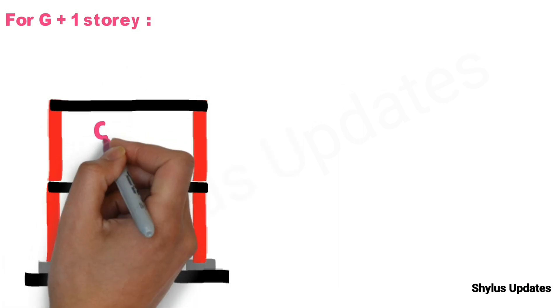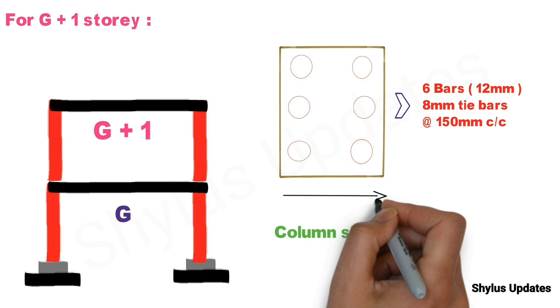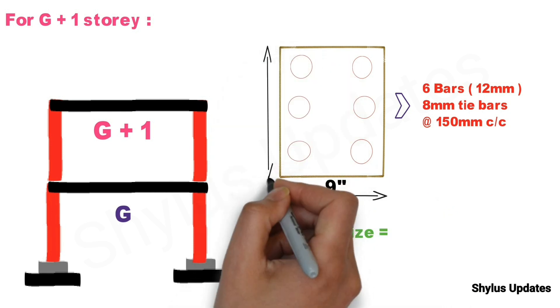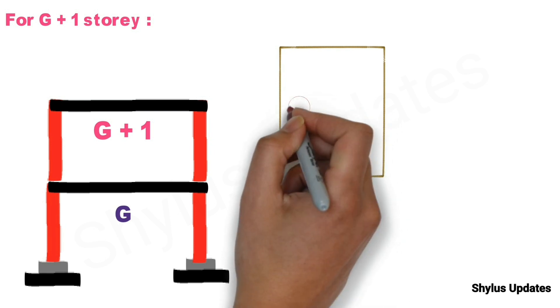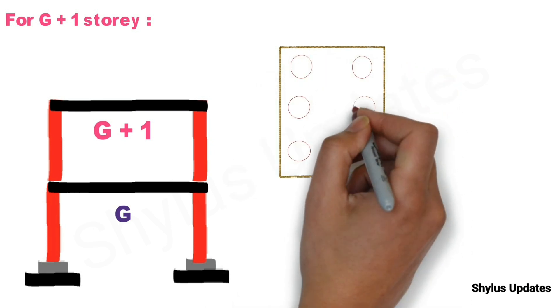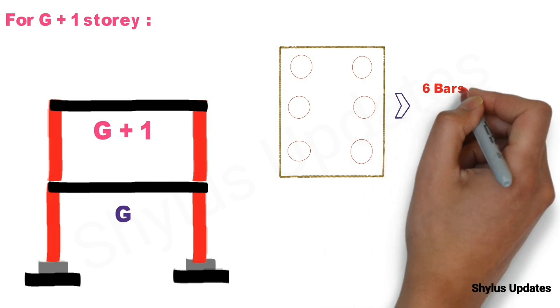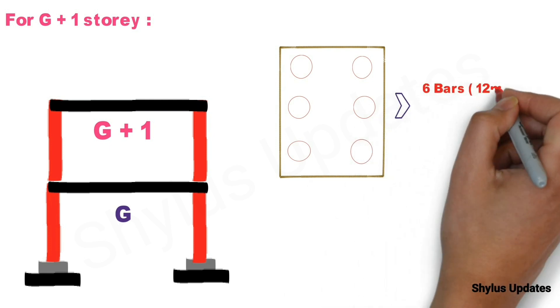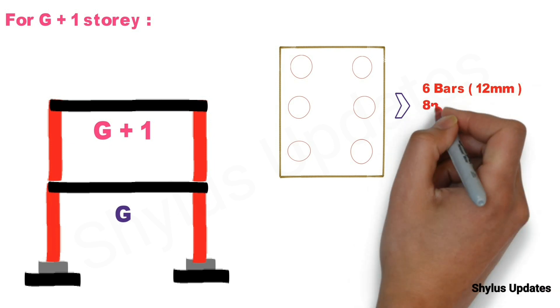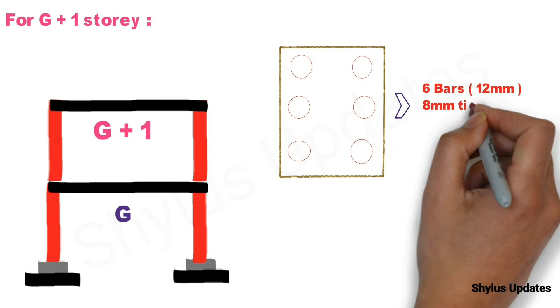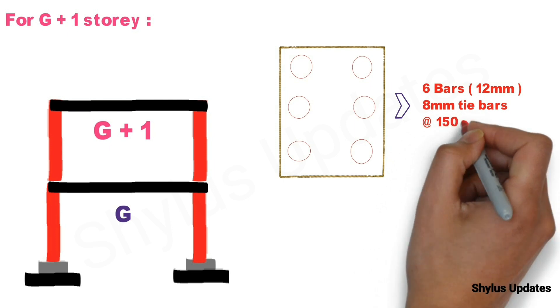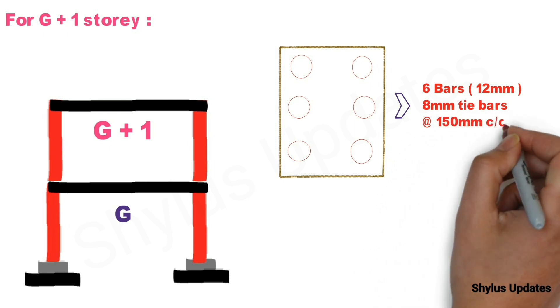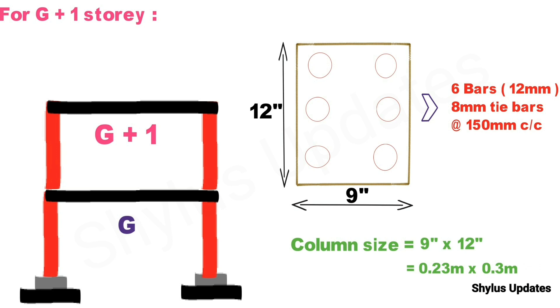For G plus 1 storey, the column size should be 9 inch into 12 inch or 0.23 meter into 0.3 meter. For this size of column we should provide minimum of 6 numbers of steel bars each 12 mm dia. This is minimum dia bar. And tie bars of size 8 mm spaced at 150 mm center to center distance spacing.